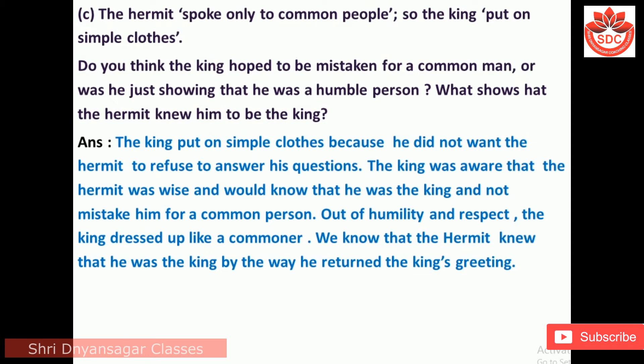C. The hermit spoke only to common people, so the king put on simple clothes. Do you think the king hoped to be mistaken for a common man, or was he just showing humility? What shows that the hermit knew him to be the king? Answer: The king put on simple clothes because he did not want the hermit to refuse to answer his questions. The king was aware the hermit was wise and would know he was the king. Out of humility and respect, the king dressed like a commoner. We know the hermit knew he was the king by the way he returned the king's greeting.